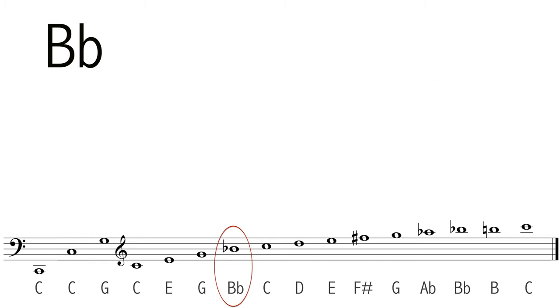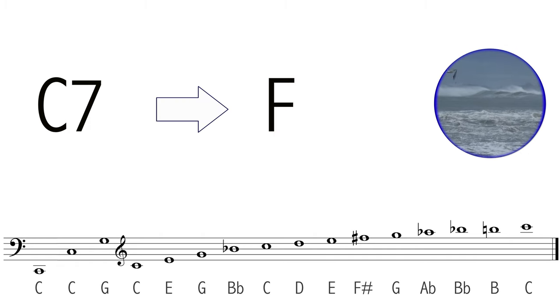The note B flat, along with the previous notes of the harmonic series, gives us the ingredients to create the chord C7, whose tritone will want to resolve to F, the subdominant.